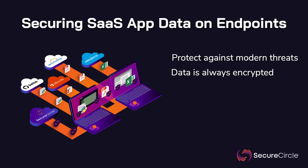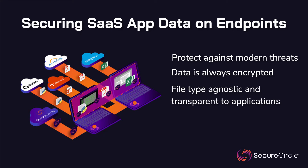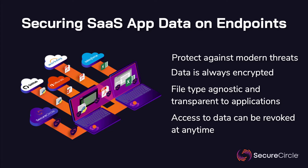Secure Circle keeps data encrypted in transit, at rest, and even in use, is completely file-type agnostic and transparent to applications, and data within files is always accessible to permitted users, but can be revoked at any time.